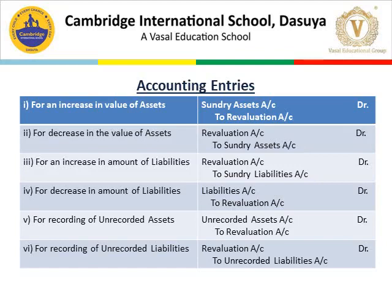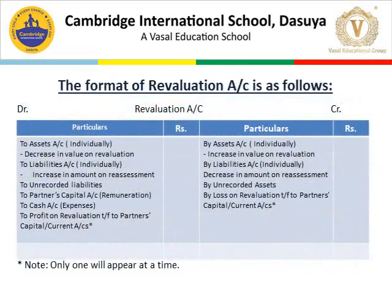These are the six journal entries when there is increase or decrease in the value of assets or liabilities, or when there are unrecorded assets or unrecorded liabilities. After passing journal entries, we have to prepare the revaluation account. As we know, whatever is written in journal entries is transferred to the ledger account — here the ledger is the revaluation account. Whatever is debited in the journal entry is recorded on the credit side of the revaluation account.